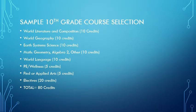Here's an example of a sample 10th grade course selection. World Literature and Composition for 10 credits, World Geography for 10 credits, Earth Systems Science for 10 credits. For math, it will typically be either Geometry, Algebra 2, or potentially something else for 10 credits — refer back to that flowchart.